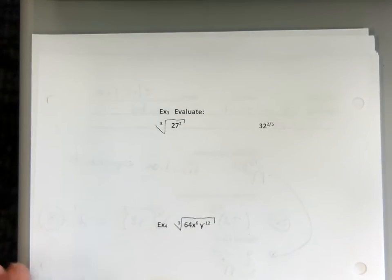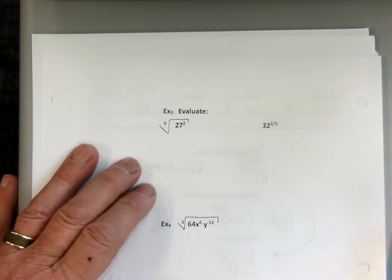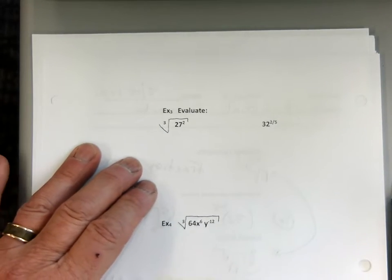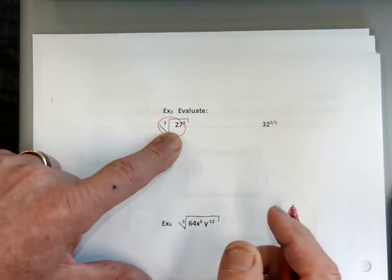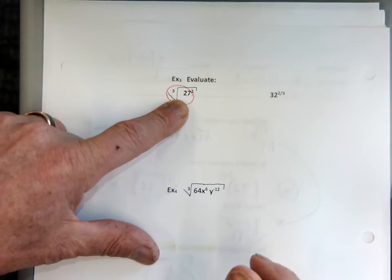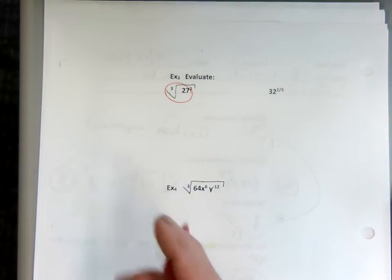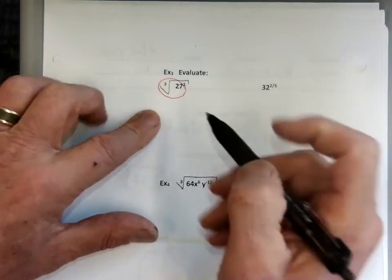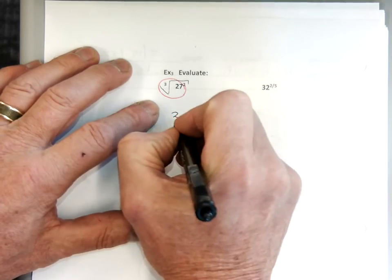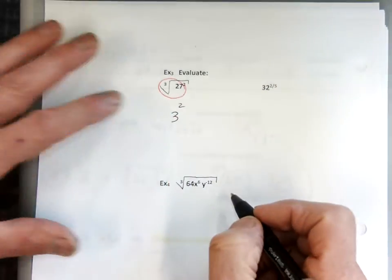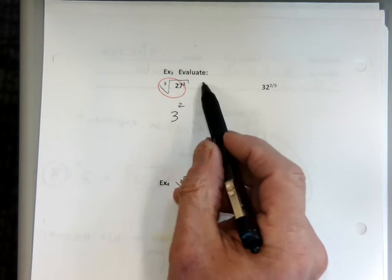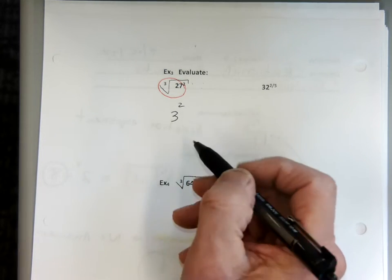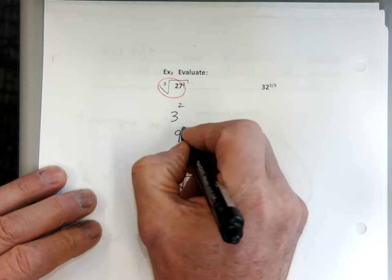Now evaluate. I can do this — 27. Is there a cube root of 27? Yes, the cube root of 27 is 3. Then 3 squared — 3 times 3 times 3 is 3. I still have a 3 squared, which makes 9.